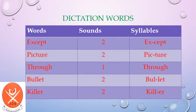Our first word is 'except' — it has two syllables and two sounds: except. Next word is 'picture' — it has two sounds and two syllables: picture. Next word is 'through' — it has one sound and one syllable: through.